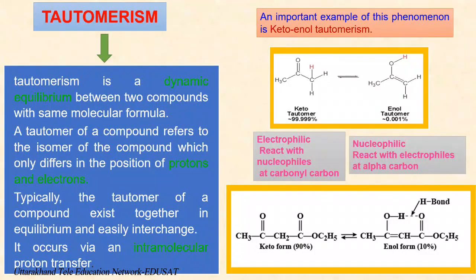The enol and keto forms are said to be tautomers of each other. It is a process that is acid-base catalyzed. The keto form of the compound is thermodynamically stable and highly favored. Acetone shows keto-enol tautomerism. Acetone exists in rapid equilibrium with a tautomeric form known as enol, and it exists 99.999% in keto tautomer and only 0.001% in enol tautomer. Both have different chemical properties. The keto form is electrophilic in nature and reacts with nucleophiles at the carbonyl carbon, whereas the enol form is nucleophilic and reacts with electrophiles at the alpha-carbon.